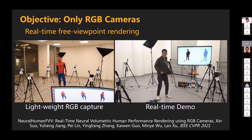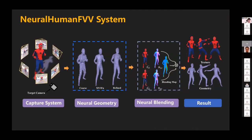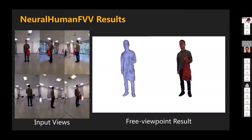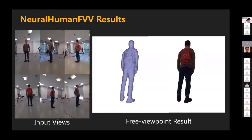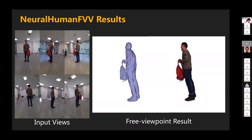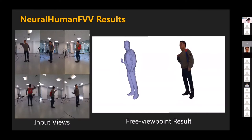The main idea is to use a sparse capture system to mitigate the cost problem, then use learned neural geometry since you only have RGB. We also find neural texture blending is very important — you want to blend the texture so it looks good when changing viewpoint. This even handles complex human-object interactions; the person's geometry is recovered by the six RGB cameras and you can even recover bags the person is carrying.